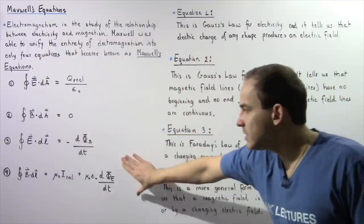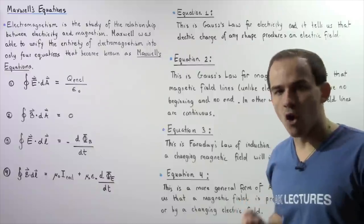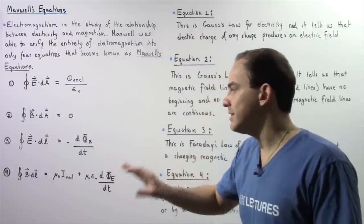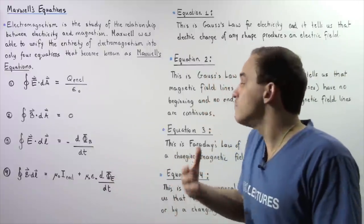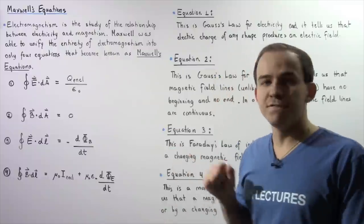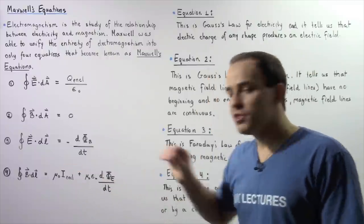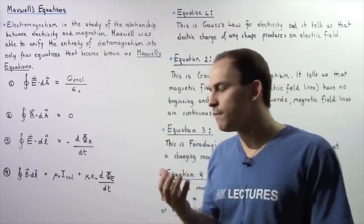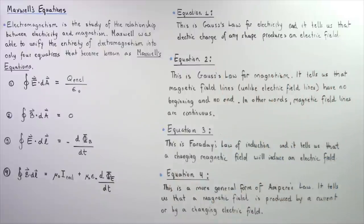Finally, let's examine equation four. Equation four will be discussed and derived in more detail in the following lecture. This equation is known as the general form of Ampere's law.